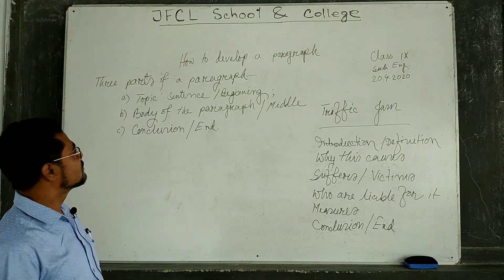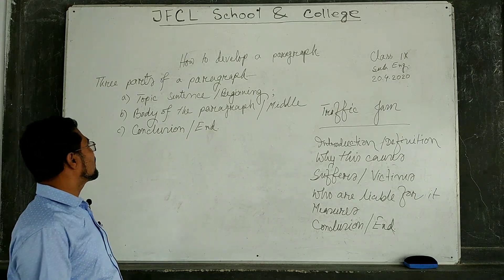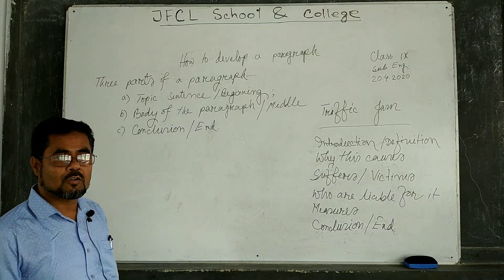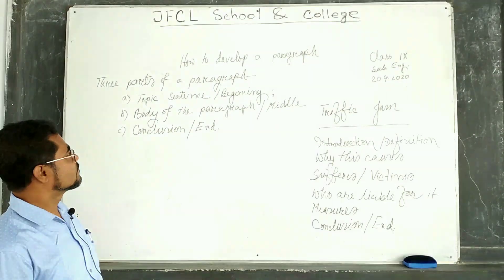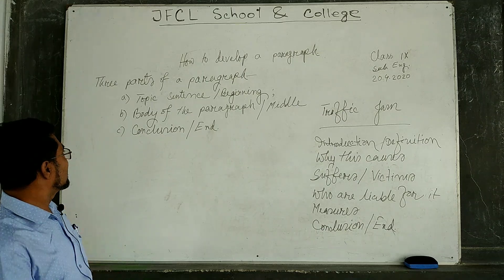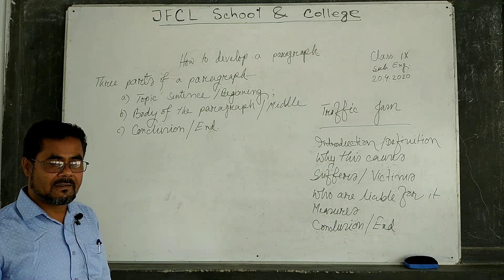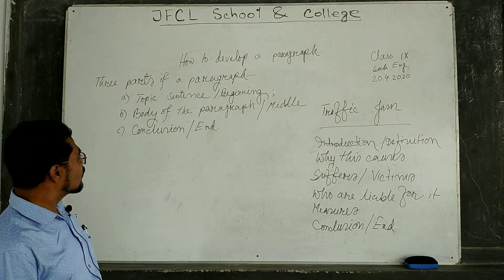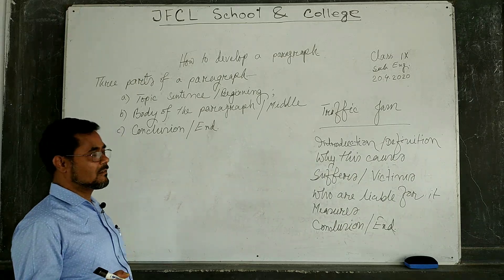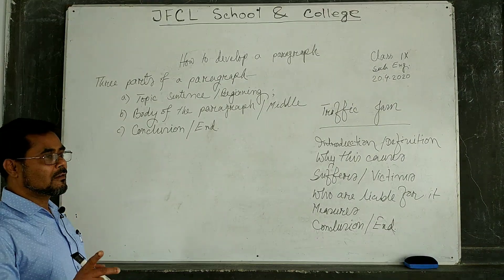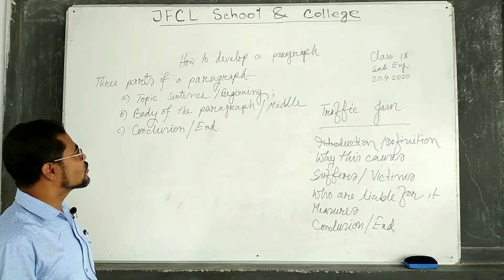A paragraph has three parts. Number one: the paragraph must have a topic sentence — that means it must have a beginning. Its second feature is the body of the paragraph, or middle. The third point is the conclusion, or end. In the topic sentence, the main point of the paragraph would be focused. It is also called the beginning.